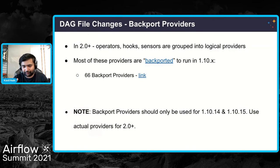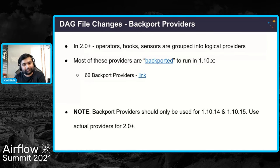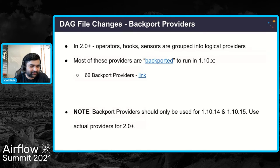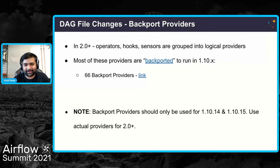From Airflow 2.0 onwards, all operators, hooks, sensors, secrets, and even log-related code were logically grouped into providers. For example, all Google operators — Google Cloud Storage, BigQuery, and everything — were grouped under a single provider package called 'apache-airflow-providers-google'. These are versioned and released separately from the Apache Airflow core, allowing more frequent releases. Users on 1.10.x had to wait for a new Airflow release just to use a new operator — having this separation allows providers to be released more frequently.